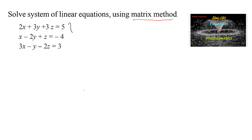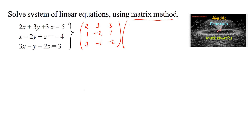The given equations can be written in matrix form. The coefficient matrix uses the coefficients of x, y, z: first equation gives 2, 3, 3; second equation gives 1, -2, 1; third equation gives 3, -1, -2. This is the coefficient matrix A, and the variables x, y, z form a column matrix X.